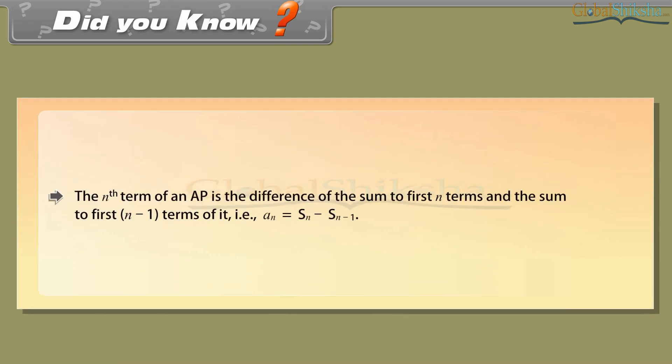Did you know? The Nth term of an AP is the difference of the sum of the first N terms and the sum of the first (N−1) terms. That is, AN = SN − S(N−1).